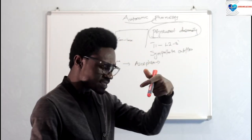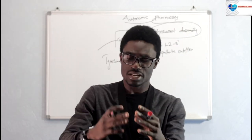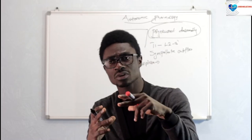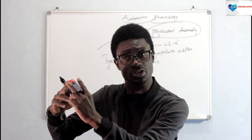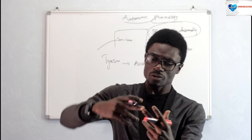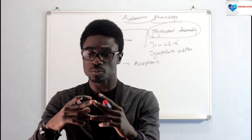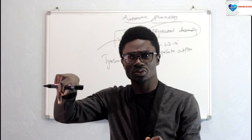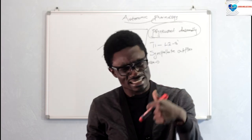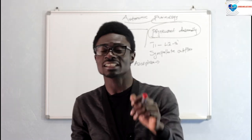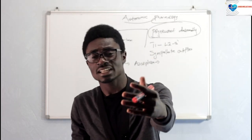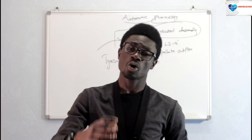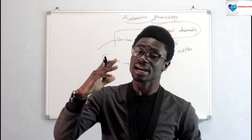In the same axoplasm, there are specialized pumps in the vesicles which are found in the terminal part of the neurons. Those vesicles have specialized transport pumps that transport dopamine into the vesicles. Inside the vesicles, dopamine gets converted into norepinephrine by an enzyme known as dopamine beta hydroxylase.